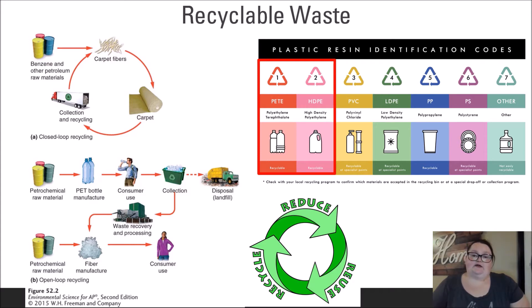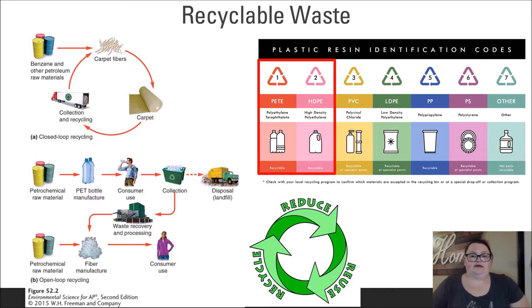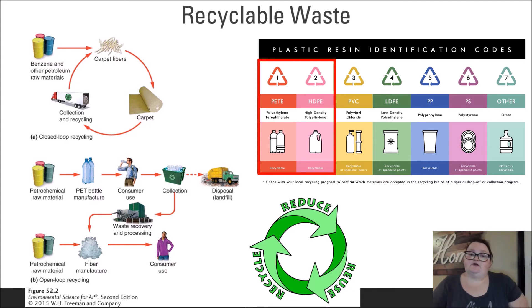Open loop recycling occurs when a product is envisioned as something else. For example, plastic bottles are processed to produce shirts, binders, and other items. In this case, the item is often of less quality, energy and material wise, than if it had gone through closed loop recycling. While open loop can reduce the amount that goes into a landfill, closed loop is always the preferred method of recycling.